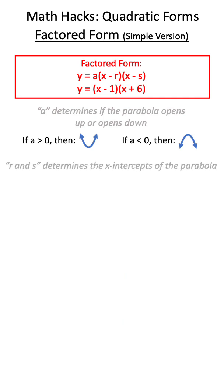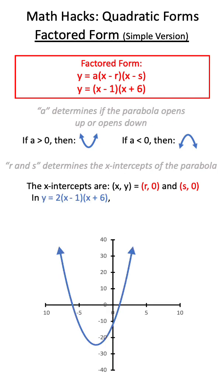R and S can give us our x-intercepts of our parabola. Now remember, in factored form it is negative R and negative S, so we must change the sign. In an expression like this, our x-intercepts would be (1, 0) and (-6, 0).